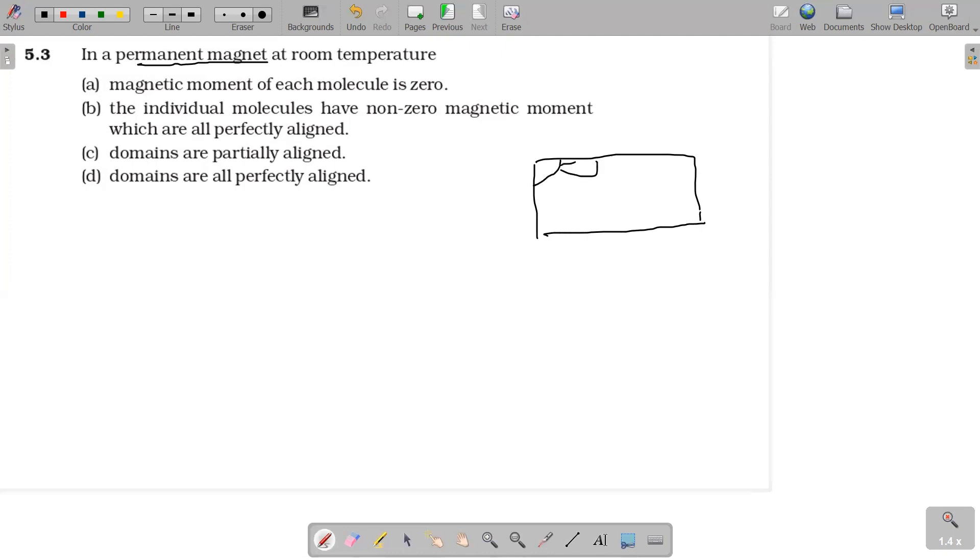Within the domain, all the magnetic moments are acting in the same direction. But when you consider other domains, they may be in different directions. At room temperature, domains are partially aligned - this is the correct answer.